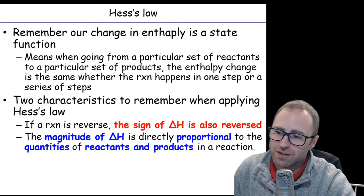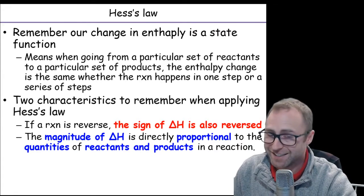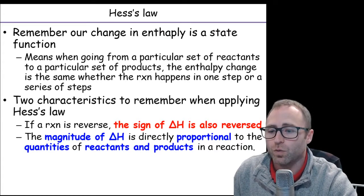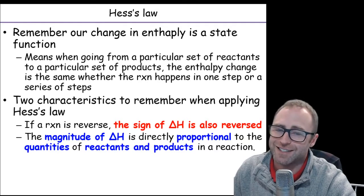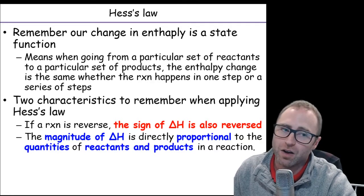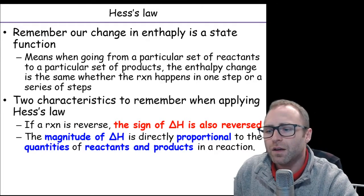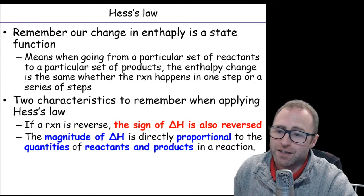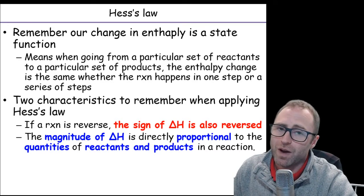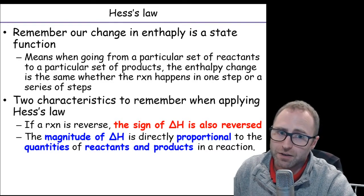So if we change the direction of the reaction, which is legal, we also have to change the sign. We have to flip the sign of whatever delta H was. The magnitude of delta H is going to be directly proportional to the quantities of our reactants and products in our reaction.